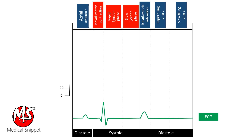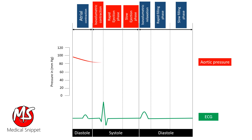Let's plot pressure in mmHg on the y-axis and study the aortic, left ventricular, and atrial pressure curves in various phases of the cardiac cycle. Aortic pressure is around 80 mmHg during diastole. During the ejection phase of the left ventricle, aortic pressure increases to about 120 mmHg as blood is pumped into the aorta. During the isovolumetric relaxation phase, the aortic valve closes, causing a dicrotic notch in the aortic pressure curve.